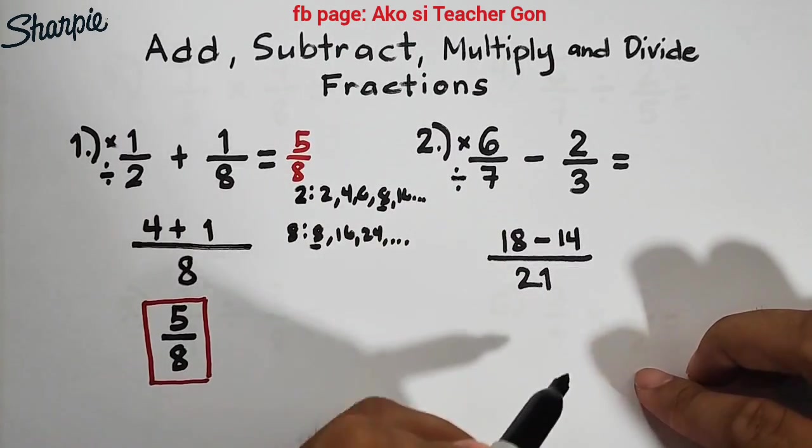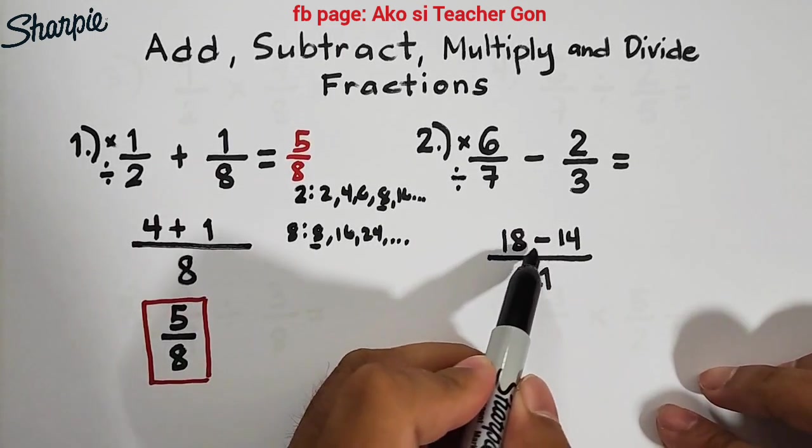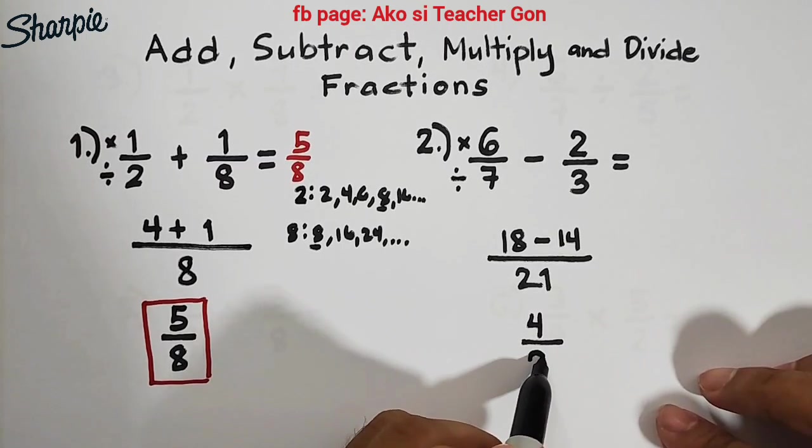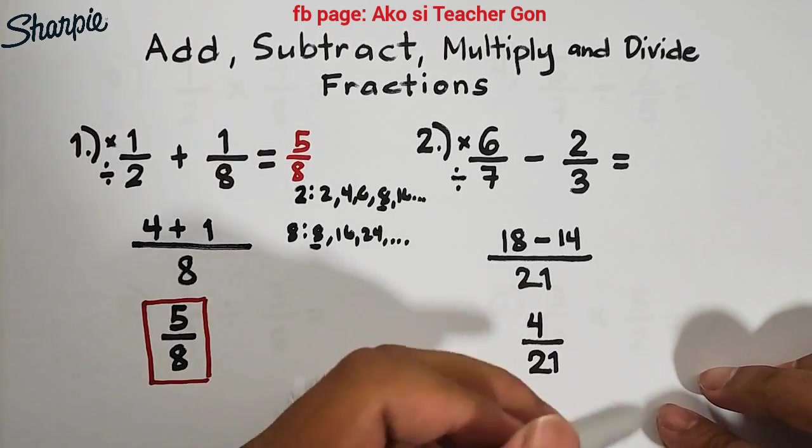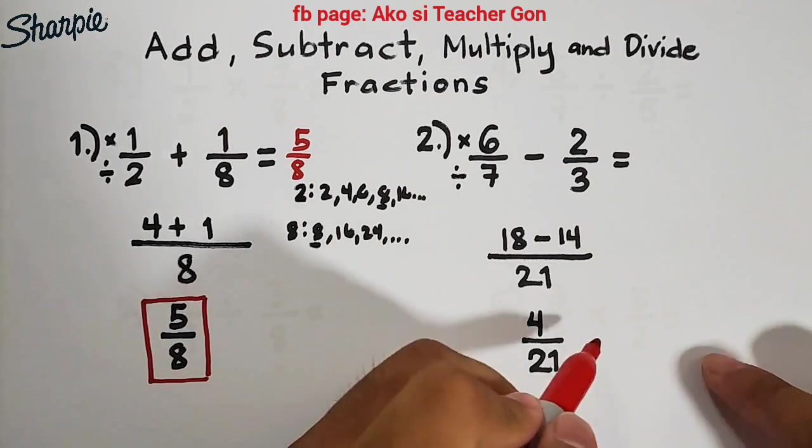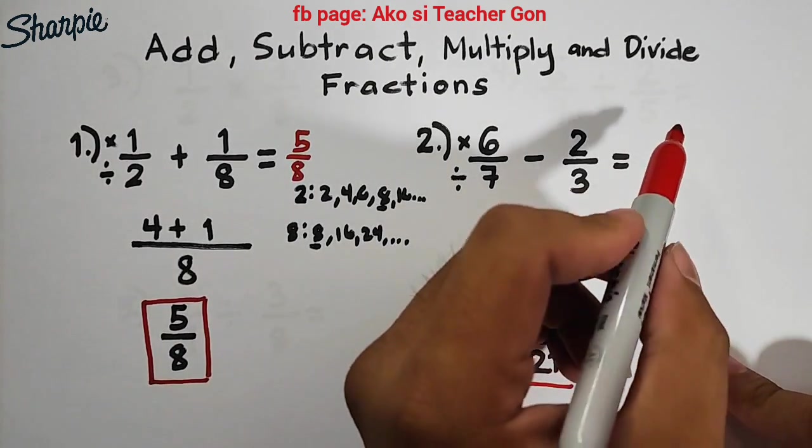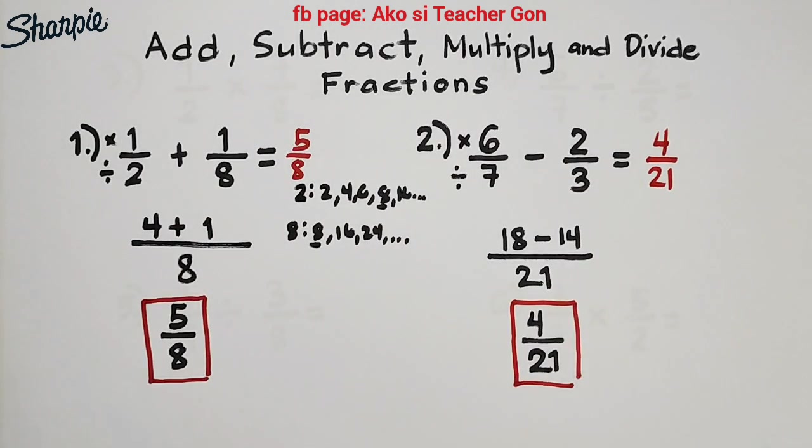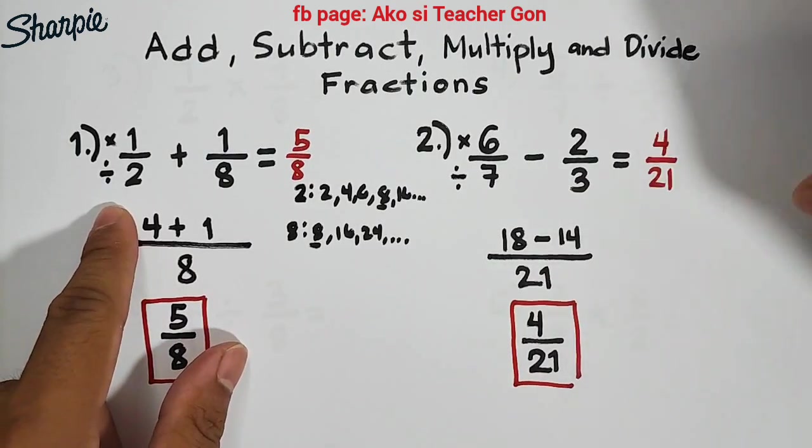Copy this operation minus, then 21 divided by 3 is 7 times 2, which equals 14. We need to simplify our numerator: 18 minus 14 equals 4 over 21. This is now the final answer guys, it's already simplified because there's no common factor. So we have 4/21. We are done with addition and subtraction.